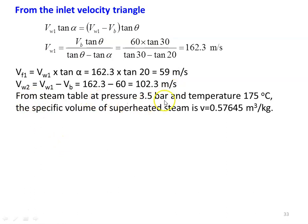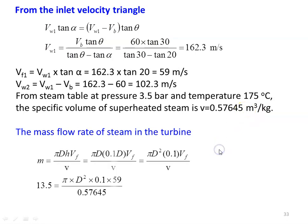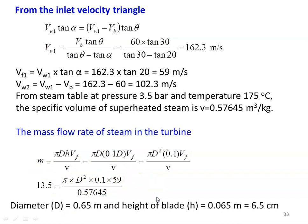Using the mass flow equation m = πdHVf / v, with H = 0.1d, substituting and solving for d: the rotor diameter is 0.65 m and blade height H = 0.065 m, which is 6.5 cm.